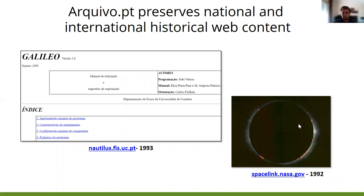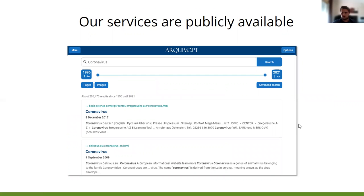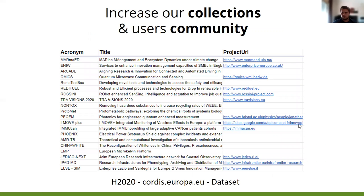Arquive.pt is a Portuguese web archive initiative which preserves historical web content. Arquive.pt permanently selects, archives, and provides public access to its web collection. In these examples, you can see on the left side the oldest Portuguese webpage from Coimbra University from 1993 and the oldest image from Spacelink from 1992. We are continuously indexing the preserved information so anyone can search and view, and at the same time we also increase our collections and user community.